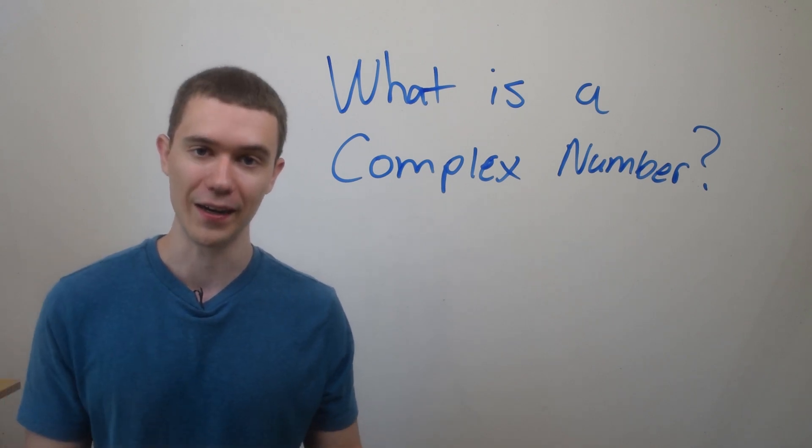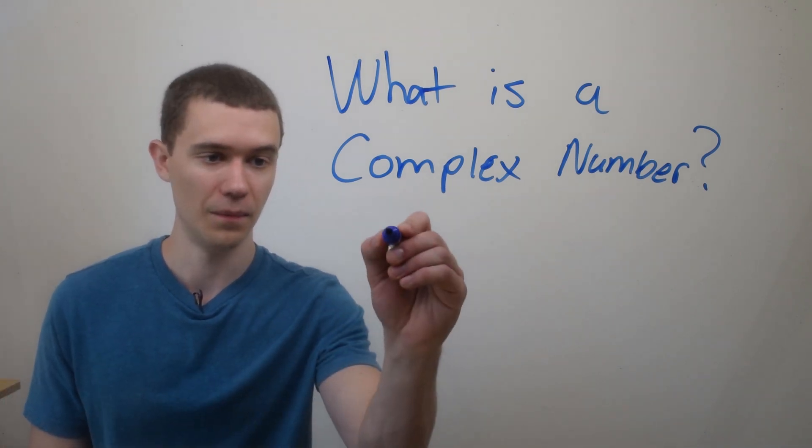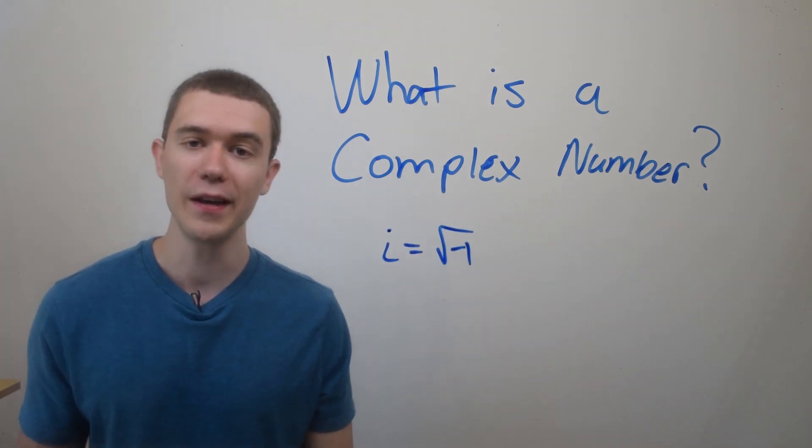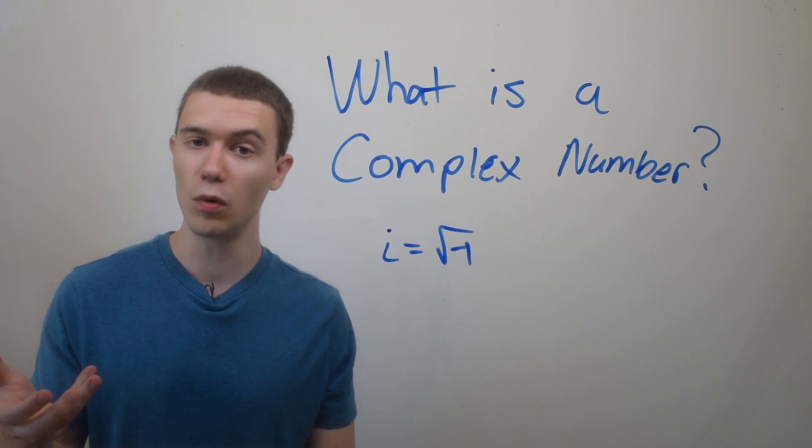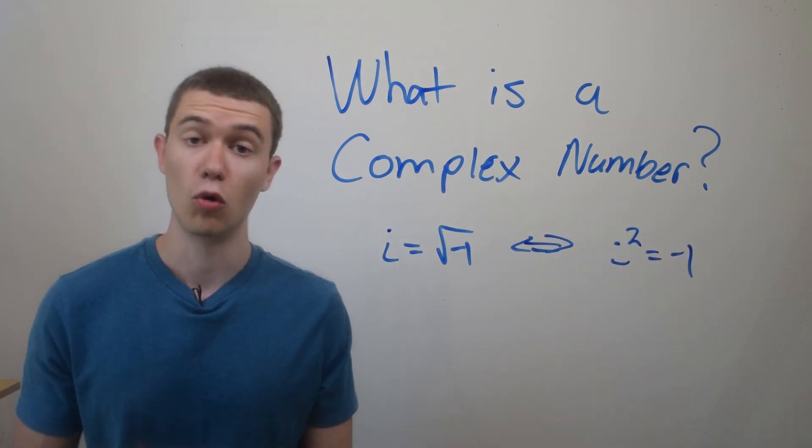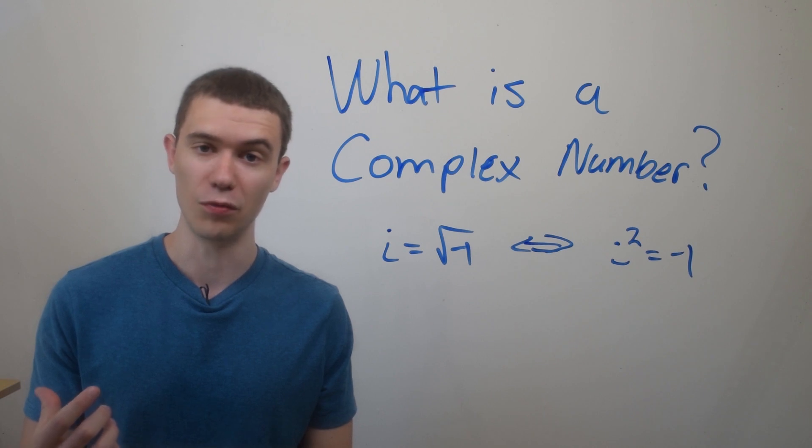Let's introduce i, the imaginary number. By definition, i is the square root of negative one. So if we could take the square root of negative one, i is what it would be. Or equivalently, i squared is negative one.